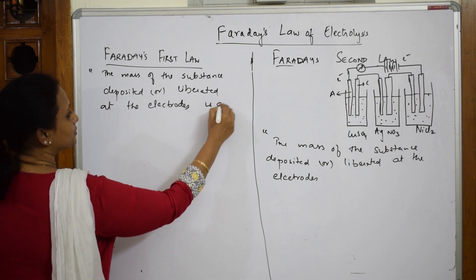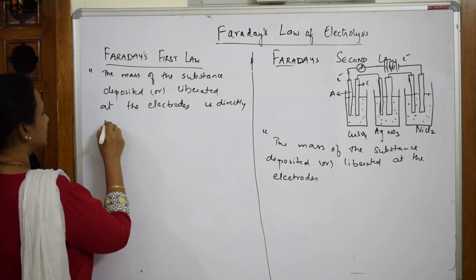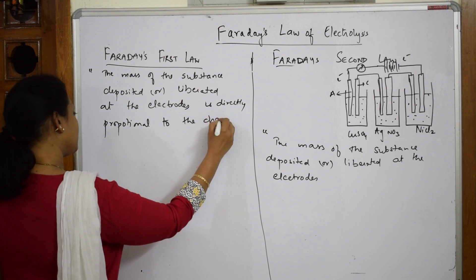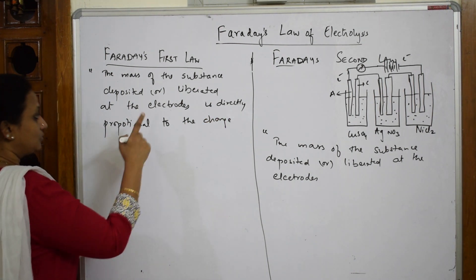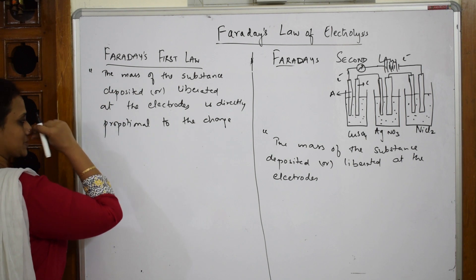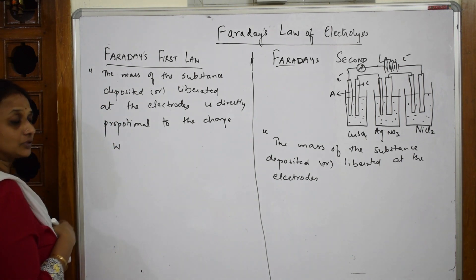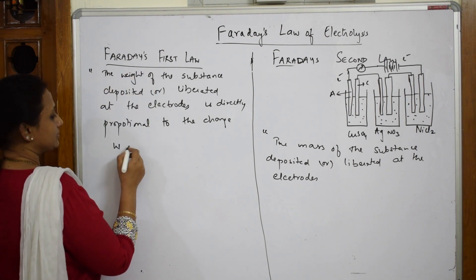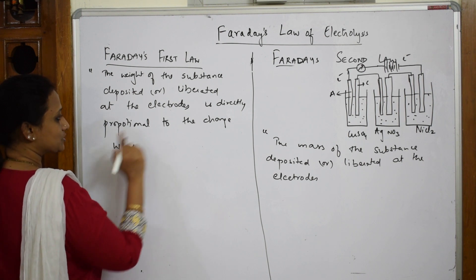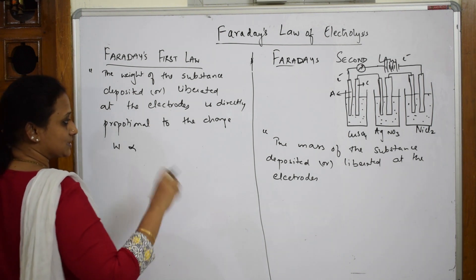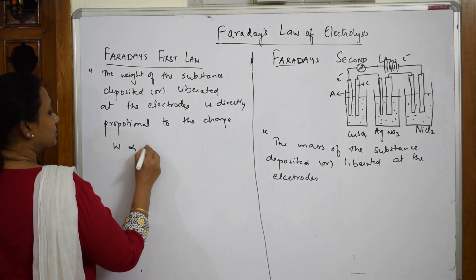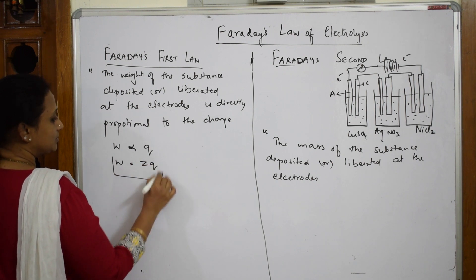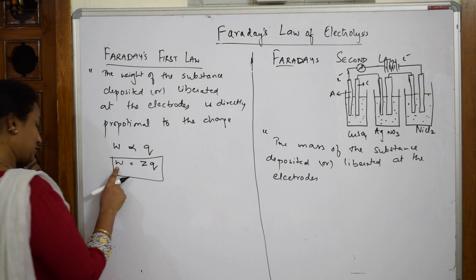The mass (W) of the substance deposited or liberated at the electrodes is directly proportional to the quantity of charge (Q) which you are passing. When we remove the proportionality constant, this becomes W = zQ. This is the first law.